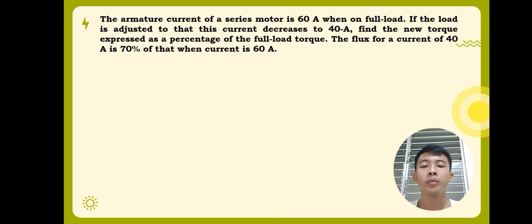In this problem, the first thing we'll do is to list down the given. For the I1, or the armature current when on full load, it is equal to 60 amperes. Then, since it is adjusted and the current decreased, the I2 will be 40 amperes. And lastly, the flux is 0.7 or 70% of that when the current is 60 amperes.